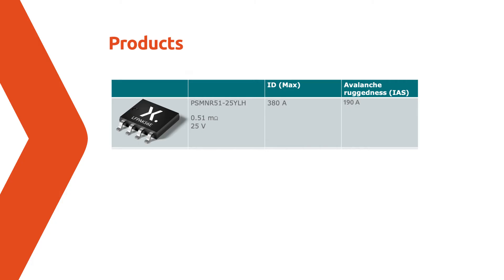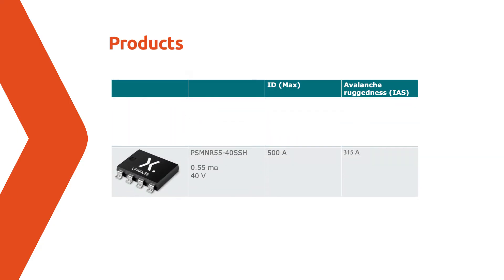The device can therefore handle a high continuous current of 380 amps. At the higher voltage of 40 volts, the larger 8 by 8 millimeter package LFPAK 88 has an RDS(on) of 0.55 milliohms, and this device can handle a continuous current of 500 amps.